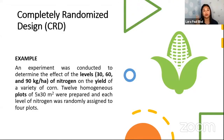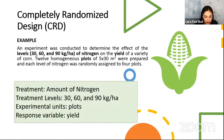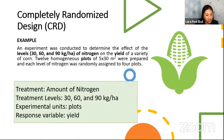Each level of nitrogen was randomly assigned to 4 plots. So we have 3 levels, then you randomly assigned these levels or applications to the different plots. Recall, our treatment here is the amount of nitrogen — that's 30, 60, and 90. So that's the level.